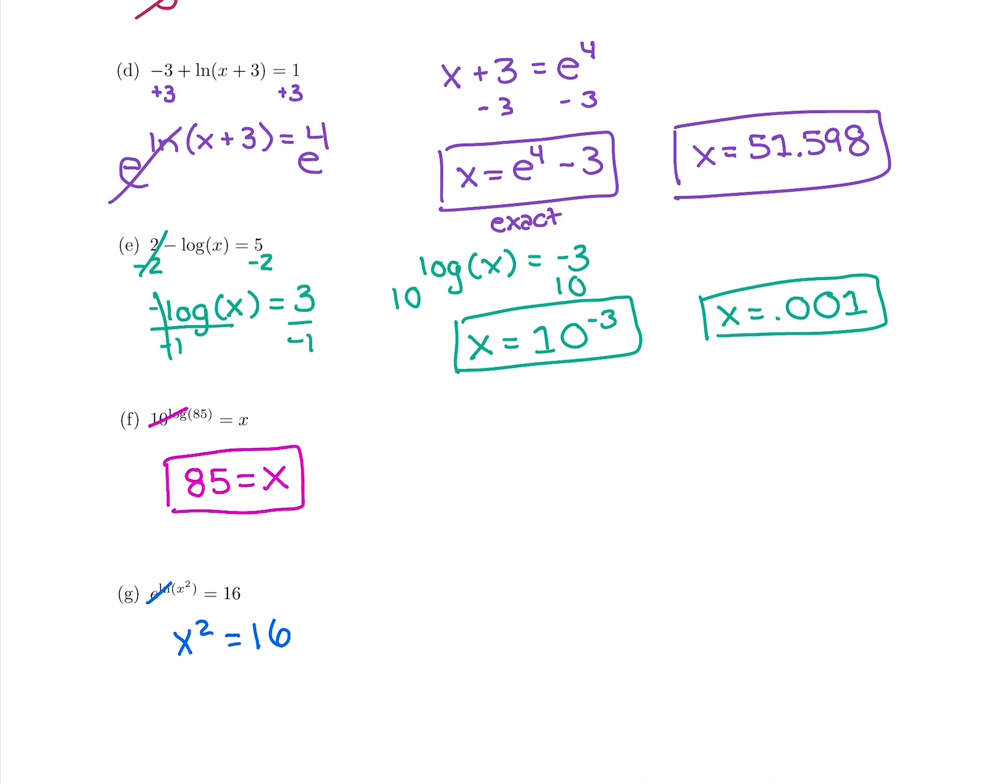And then you can take the square root of both sides. You want to think about what number squares to be 16. And we want to remember to do plus or minus, because there's a positive square root and a negative square root. And the square root of 16 is 4. So both positive 4 and negative 4 will square to be 16, so you have two x values as your answer. Positive 4 and negative 4.